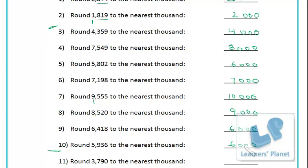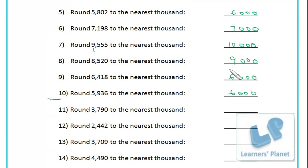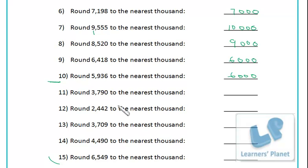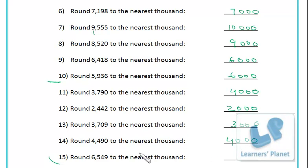Up to number 10 I have written the answers - just match your answers with mine and write down your score. Now take the next five problems. Copy each number one by one and write down the correct answer. When you are done, play the session again. The answers are: 4000, 2000, 3000, 4000, 7000. Match your answers with mine and write down your score.